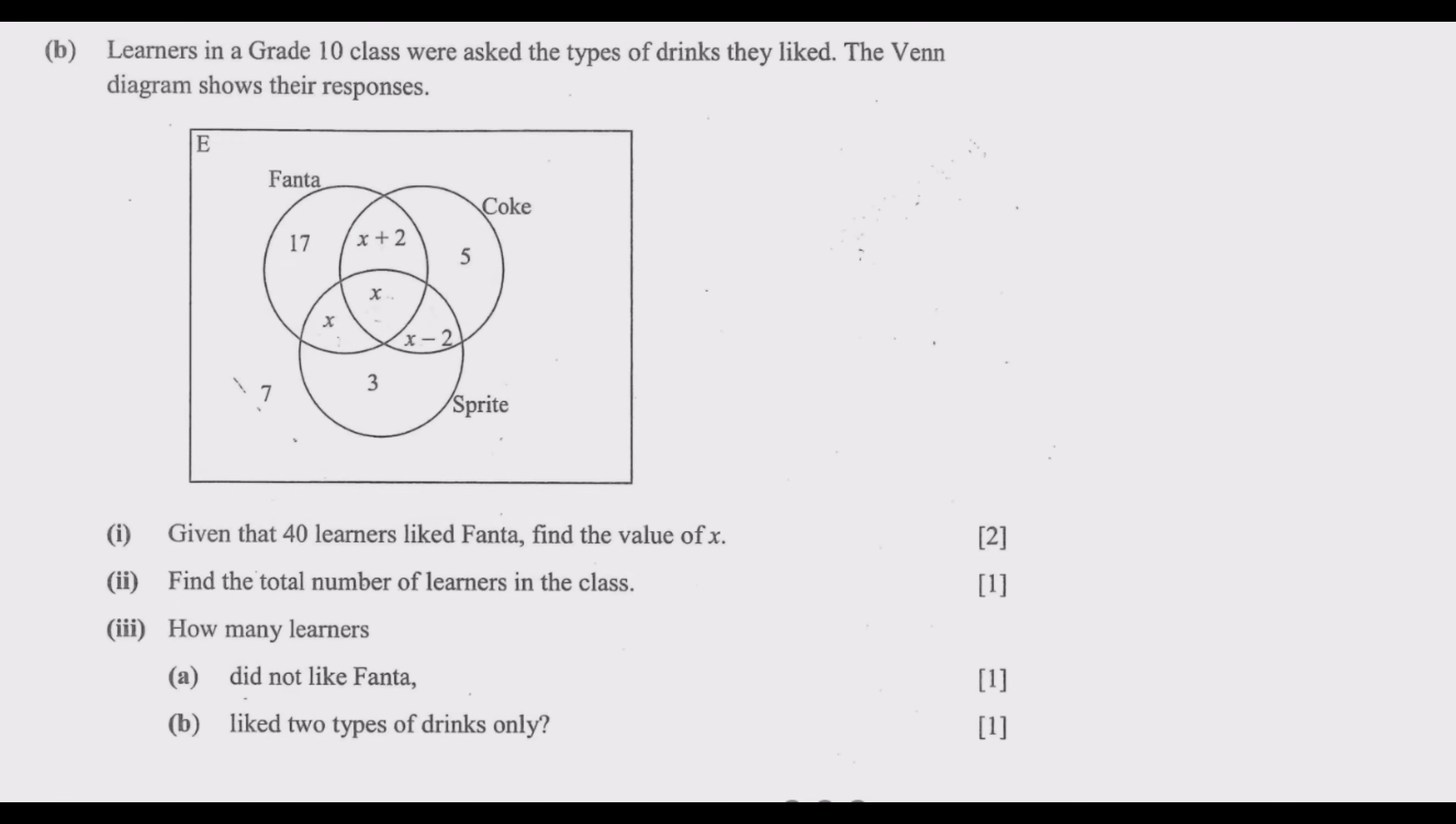We move to question b. Learners in a Grade 10 class were asked the types of drinks they liked. The Venn diagram shows their responses. We have Fanta, Coke, Sprite, and we have 17, and we have these values.